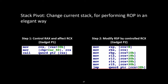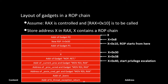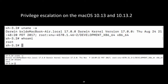The stack pivot used in this ROP chain uses the following gadgets. At the beginning, we use rcx to control rcx, then use rcx to control rsp — the stack pointer. By using these vulnerabilities, we achieved privilege escalation on macOS 10.13, 10.13.2, and 10.13.3.